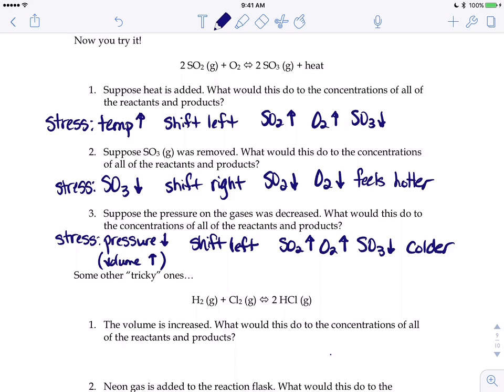And the second one, if we removed some SO3, our teeter-totter on the right hand side would suddenly become lighter, so the reaction has to shift right and try to produce more SO3 since you took some away. The SO2 would decrease, O2 decreases because we're moving away from them. The reaction will feel hotter because you're moving towards that heat energy.